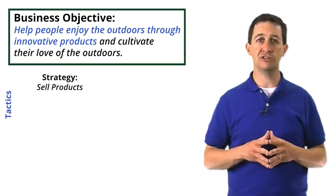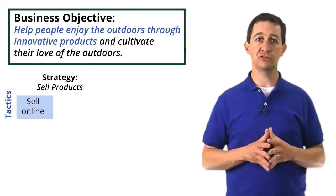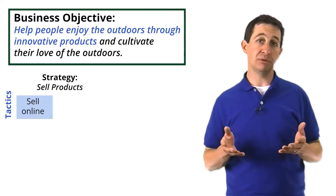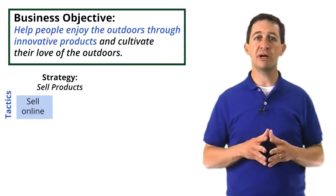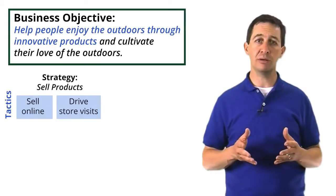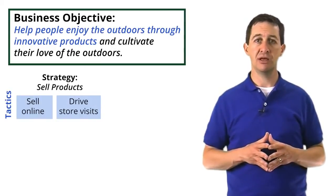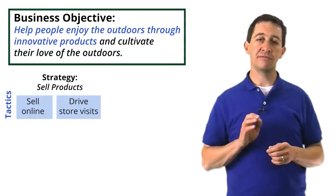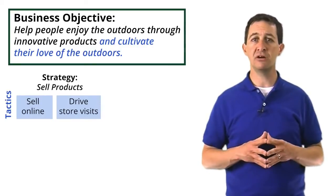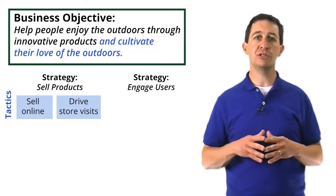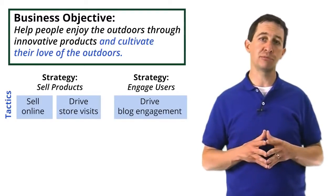A tactic to support that strategy would be to sell online via the website. Another would be to sell items in stores. We could even develop a mobile shopping app. Since we also have physical stores, one way we might drive sales is by giving people information on our website or in our mobile app that helps them locate one of our stores — that can be another tactic. Finally, to support the second half of our mission — cultivating our customers' love of the outdoors — our strategy would be to engage customers in conversations about outdoor topics, and we might do that through posts on our blog.